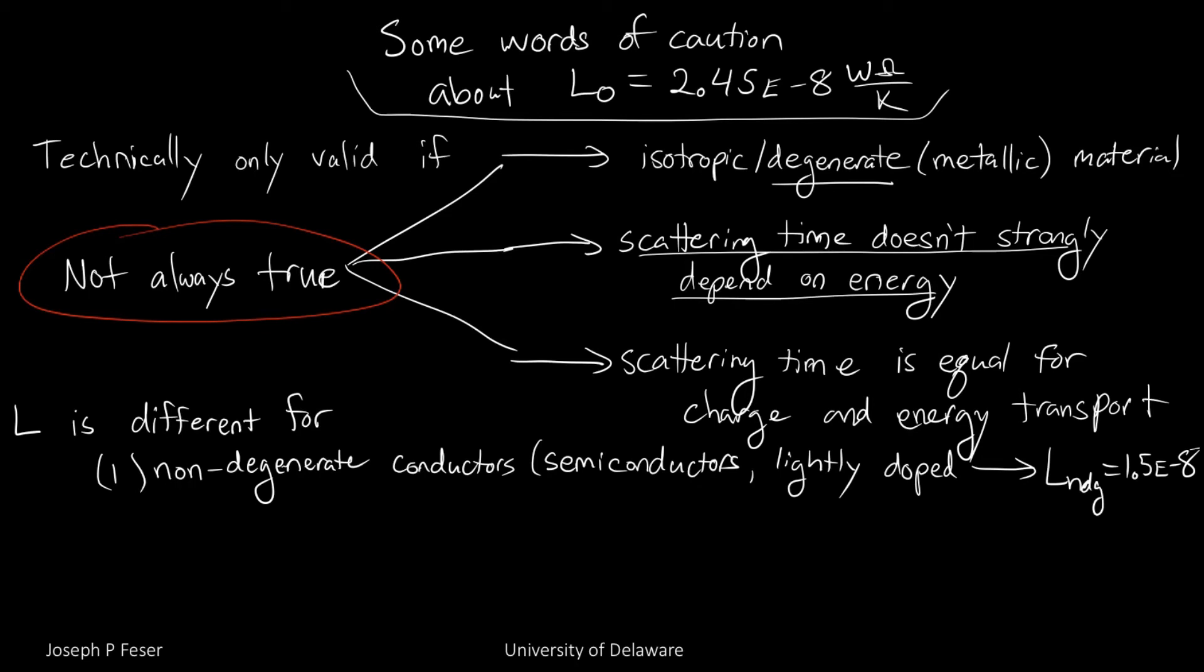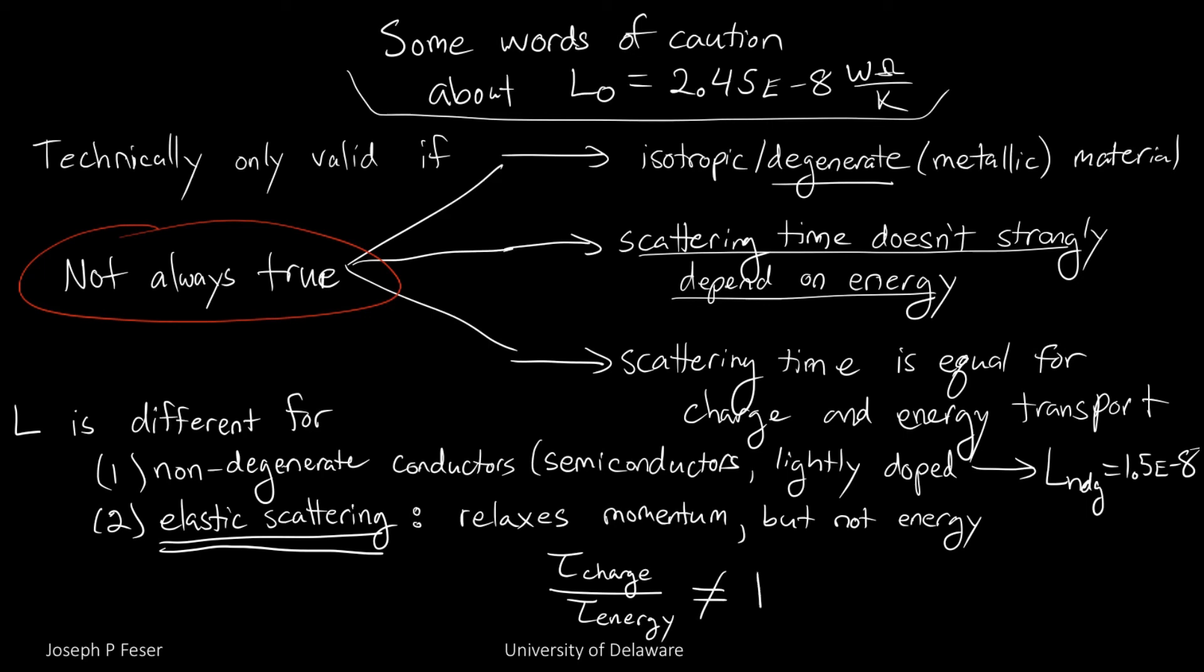And the other big thing is that the value of the Lorenz number is quite a bit different, especially when elastic scattering dominates the scattering. Why is that? Because by definition, elastic scattering relaxes momentum, like it scatters a particle, but it doesn't change the energy, right? So you are relaxing the direction of transport, but not necessarily the energy.